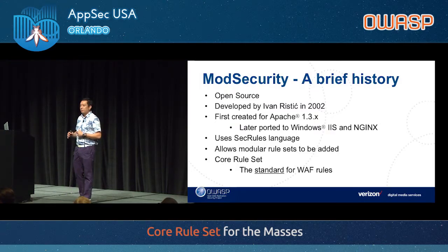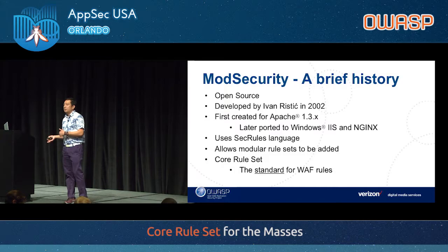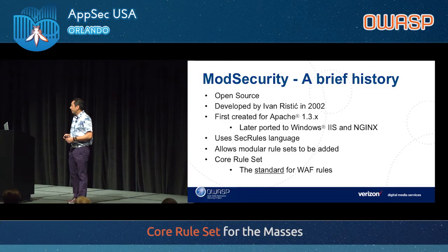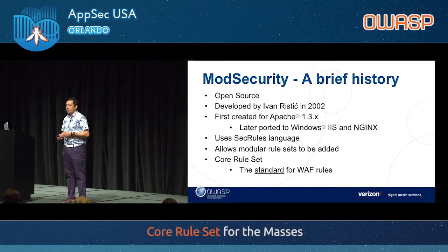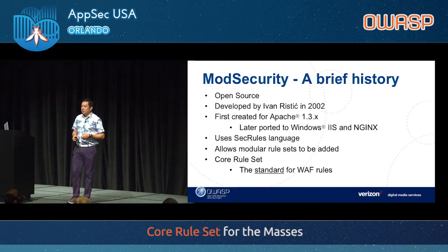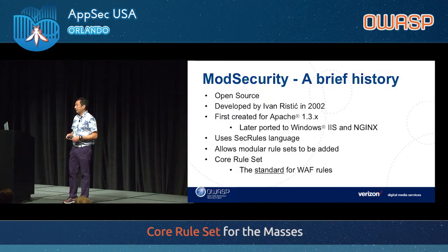A little bit about mod security and its brief history. It was started around 2002 by a gentleman named Ivan Ristić, who later moved on to do more things related to SSL. It was started as a module for Apache but later brought to Windows, IIS, and Nginx. It uses a language called SecRules for defining rules, and you can also use Lua to write rules, but SecRules is the first language it supports.